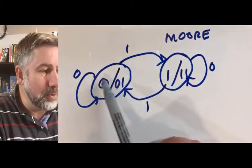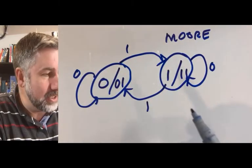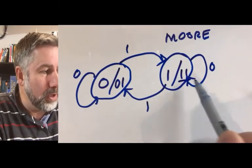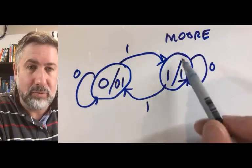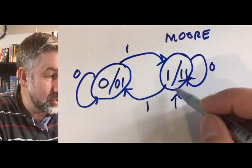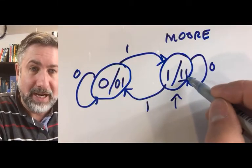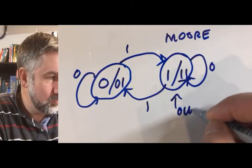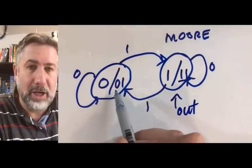Same idea, the same inputs will cause the transitions. But in this case I have an output of 1, 1 regardless of what's happening if I'm in state 1. So regardless of the transitions, if I'm in state 1 my output will be 1, 1. And if I'm in state 0 my output will be 0, 1.